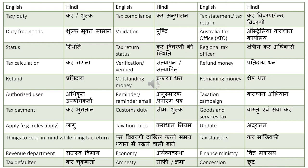Customs duty: 'sima shulk'. Tax office: 'karadhan karyalay'. Regional tax officer: 'kshetriya kar adhikari' — regional is translated as 'kshetriya'. Refund money: 'prati daidhan'. Remaining money: 'shesh dhan'.